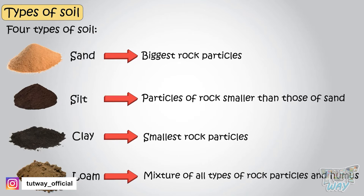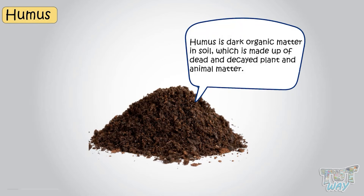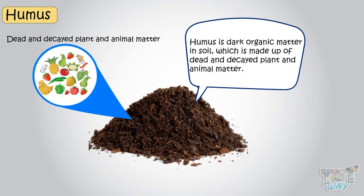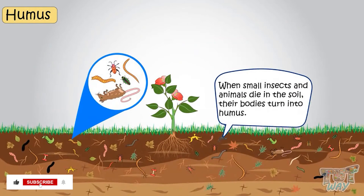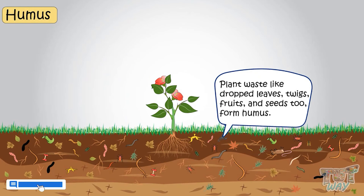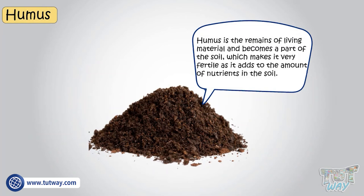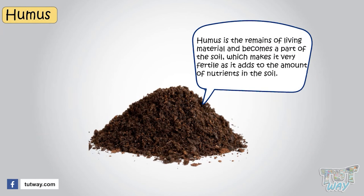Now, let's learn what humus is. Humus is dark, organic matter in soil, which is made up of dead and decayed plant and animal matter. Like when small insects and animals die in the soil, their bodies turn into humus. Likewise, plant waste like dropped leaves, twigs, fruits, and seeds too form humus. So humus is the remains of living material and becomes a part of the soil, which makes it very fertile soil, as it adds to the amount of nutrients in the soil.